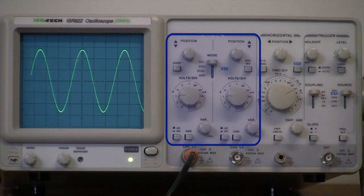The set of controls on the left of the oscilloscope vary the position and scaling of the vertical or voltage axis of the signal displayed on the oscilloscope screen.